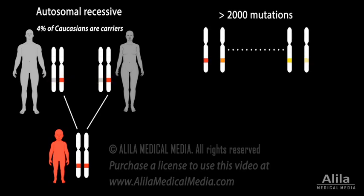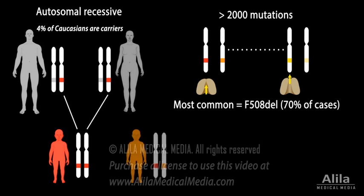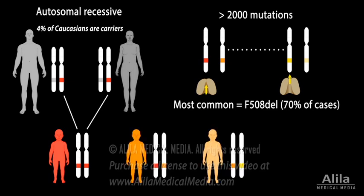More than 2,000 different CFTR mutations have been identified so far, with the most common — deletion of the amino acid phenylalanine at position 508 — accounting for about 70% of all cases. Different mutations affect gene function to different degrees, and the severity of the disease depends on which mutations a patient has.